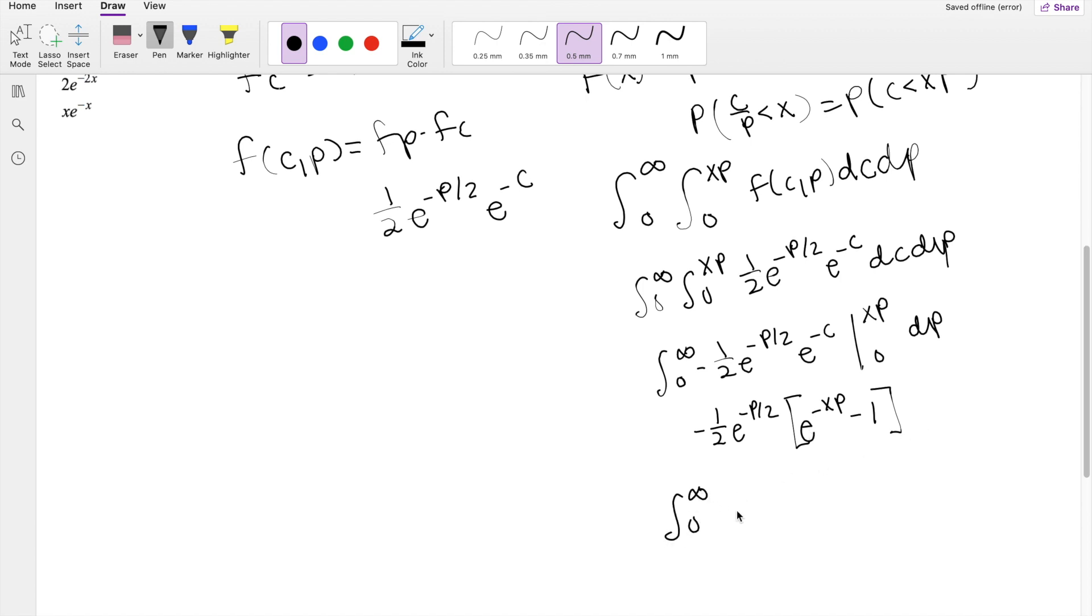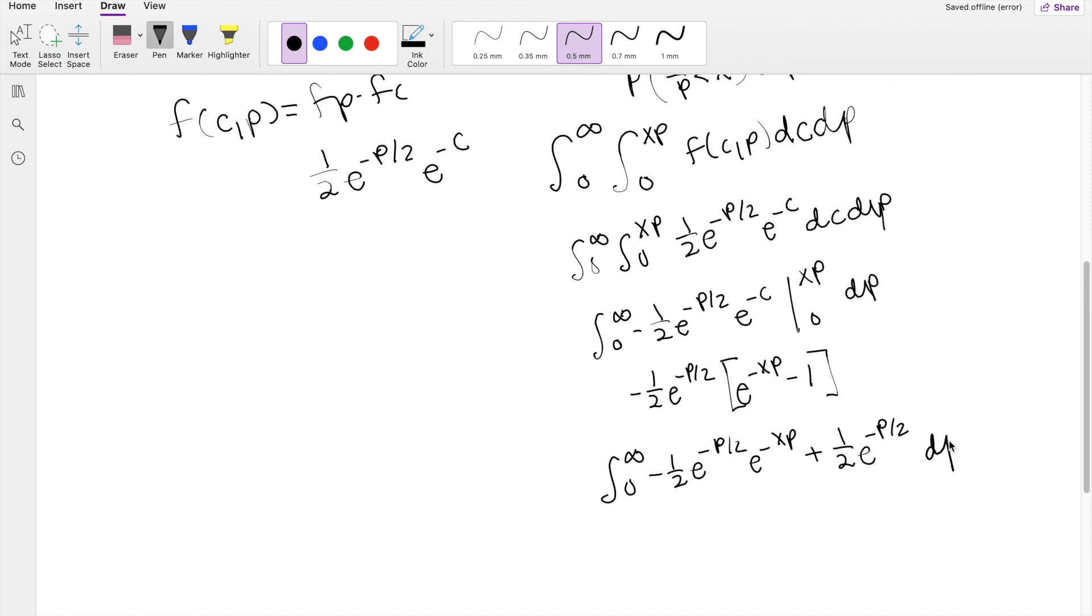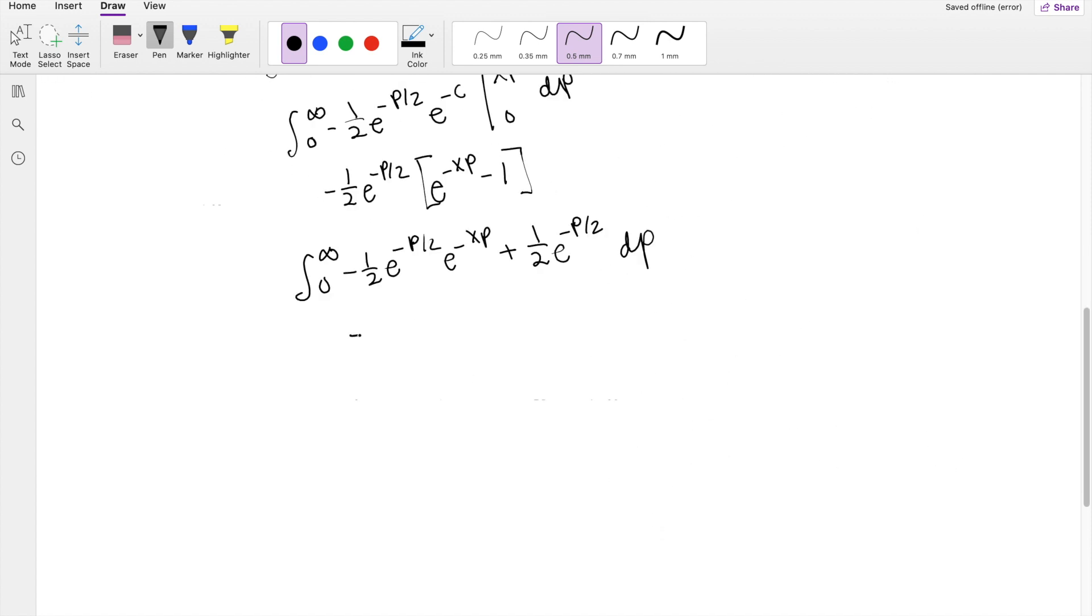The first term here is going to be negative 1 half e to the negative P over 2, e to the negative xP, minus minus that becomes positive, 1 half e to the negative P over 2, dP. So taking the anti-derivative, I think it's easiest for us to think about it like this. This is technically the same thing as negative 1 half times P minus xP, so you can actually factor out the negative P, so you get 1 half plus x on the inside, negative P 1 half plus x, plus 1 half e to the negative P over 2, taking that integral with respect to dP.